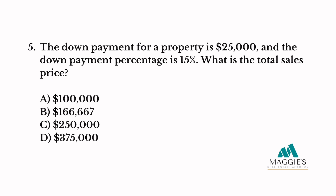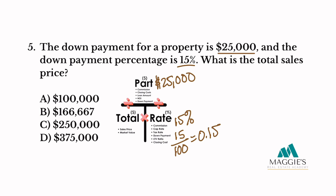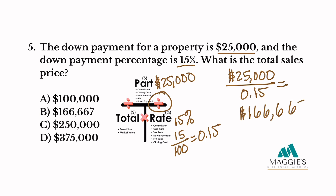Number five. The down payment for a property is $25,000 and the down payment percentage is 15%. What is the total sales price? The down payment amount of $25,000 automatically goes on the top, and the down payment percentage of 15% goes in the bottom right column. Remember to convert your percent to a decimal by dividing by 100: that equals 0.15. Now all we have to do is divide: $25,000 divided by 0.15 equals $166,667. The answer to this one is B.